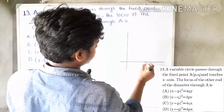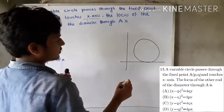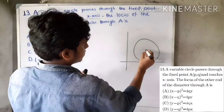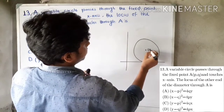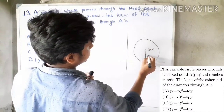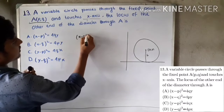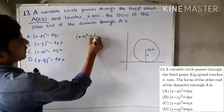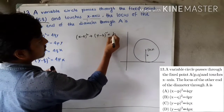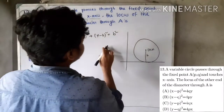We place the circle with center (a, b). Since the circle touches the x-axis, the radius equals b. So the circle equation is: (x minus a) squared plus (y minus b) squared equals b squared.